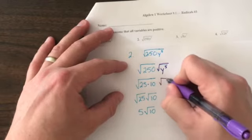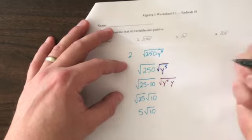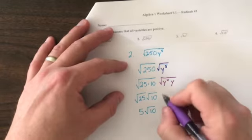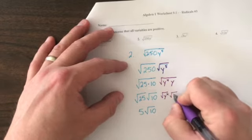The square root of y to the fourth times y, or the square root of y to the fourth times the square root of y.